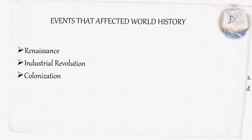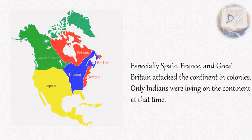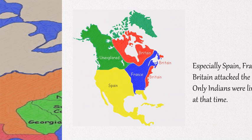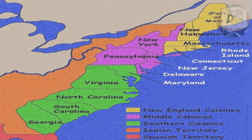With the discovery of America, many European countries — including the Netherlands, Sweden, Portugal, and especially Spain, France, and Great Britain — colonized the continent. Only Native Americans were living there at the time. Among the colonies were the 13 British colonies, and the United States was formed in the 18th century when these British colonies declared their independence.